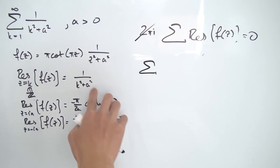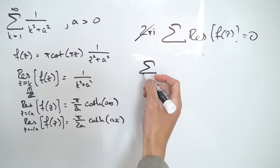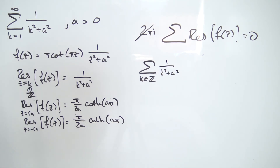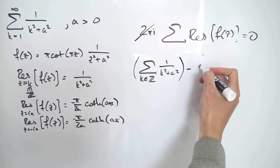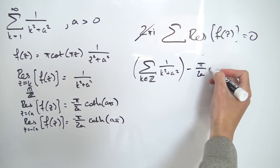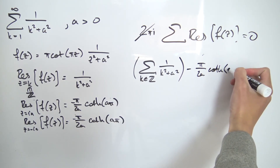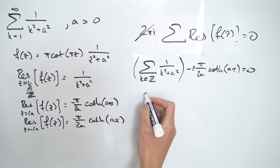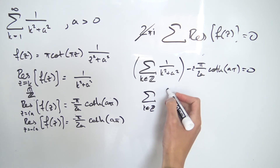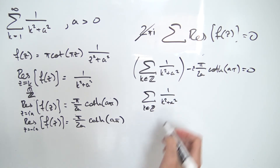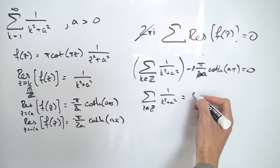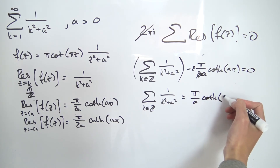Since the contour integral goes to zero, the sum of all residues equals zero. Summing the residues at the integers gives the sum over all integers k of 1 over k² + a², and we add the two residues at ±ia, each equal to −π/(2a)·coth(πa), contributing −2 times π/(2a)·coth(πa). Setting the total to zero and rearranging, the sum over all integers of 1 over k² + a² equals π over a times coth(πa).